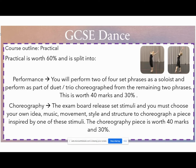The first part is your performance element. You'll be expected to perform two set phrases created by AQA, which are the same for every single student across the country taking GCSE Dance. You're expected to perform two of these phrases as a soloist — they're about 30 seconds each in duration. You'll also be expected to perform as part of a duet or a trio, and the choreography for this piece comes from the remaining two set phrases. Both of these performance elements together are worth 40 marks and 30% of your grade.